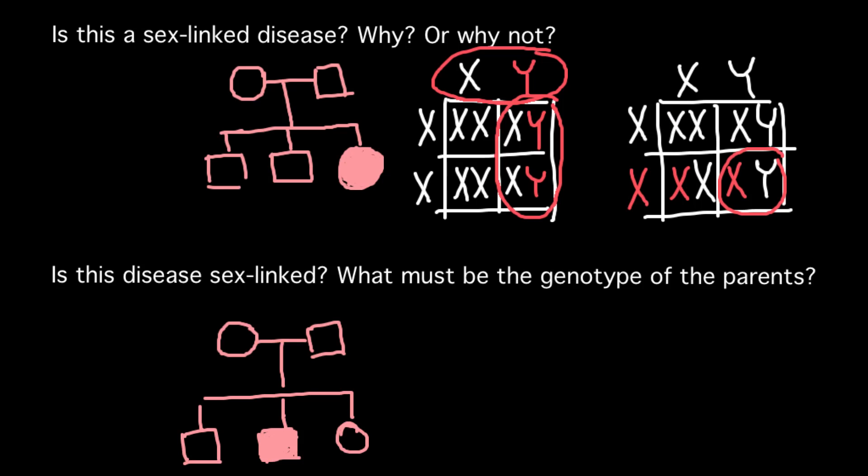So we can say that this genetic disorder is not sex-linked — not X chromosome-linked, not Y chromosome-linked — and we can say that this is going to be an autosomal recessive genetic disorder. If we represent the recessive allele as small 'a', that means the genotype of the parents would be capital A, small a for one parent, and capital A, small a for the other parent.